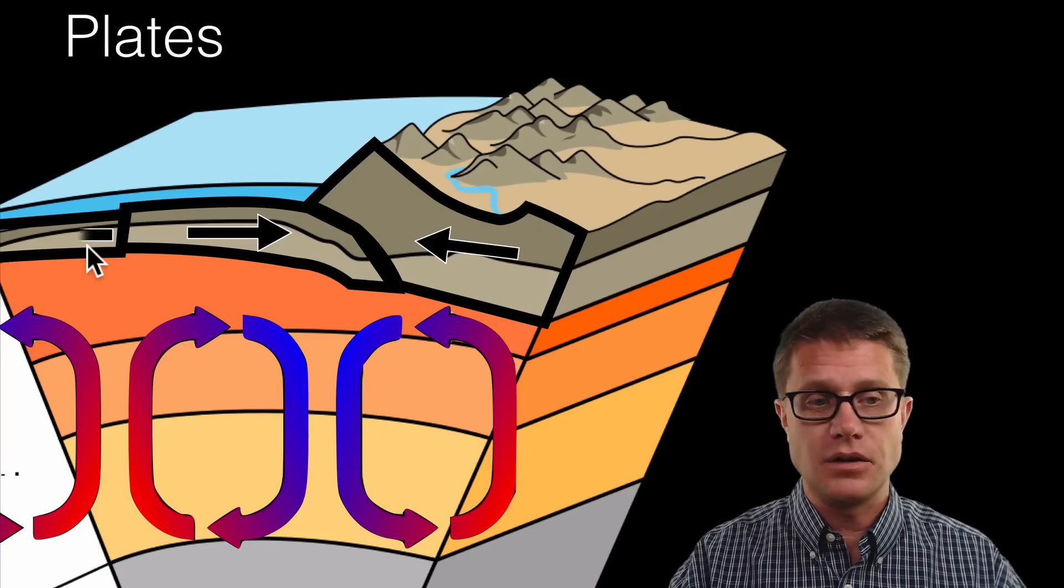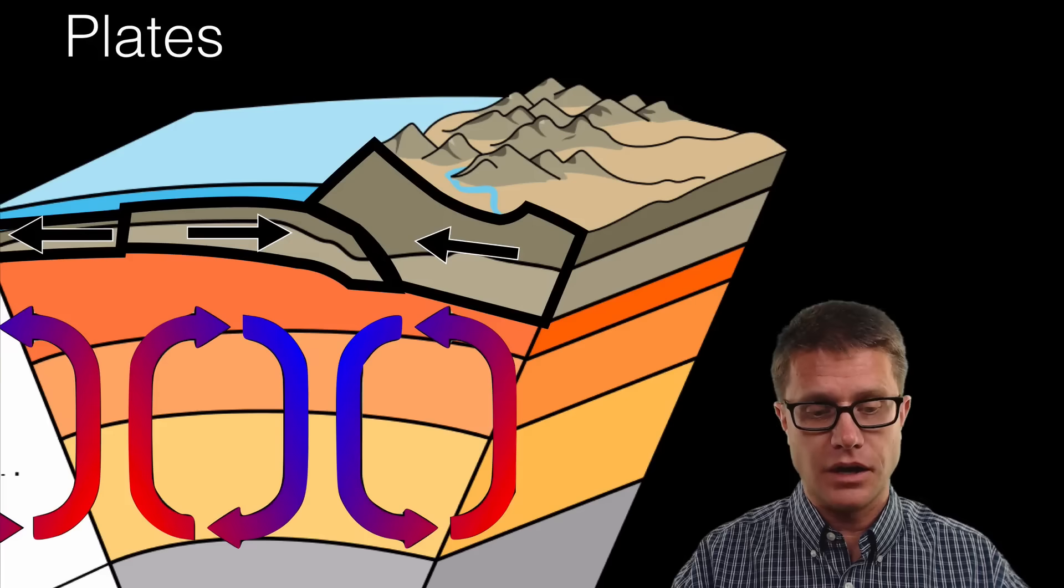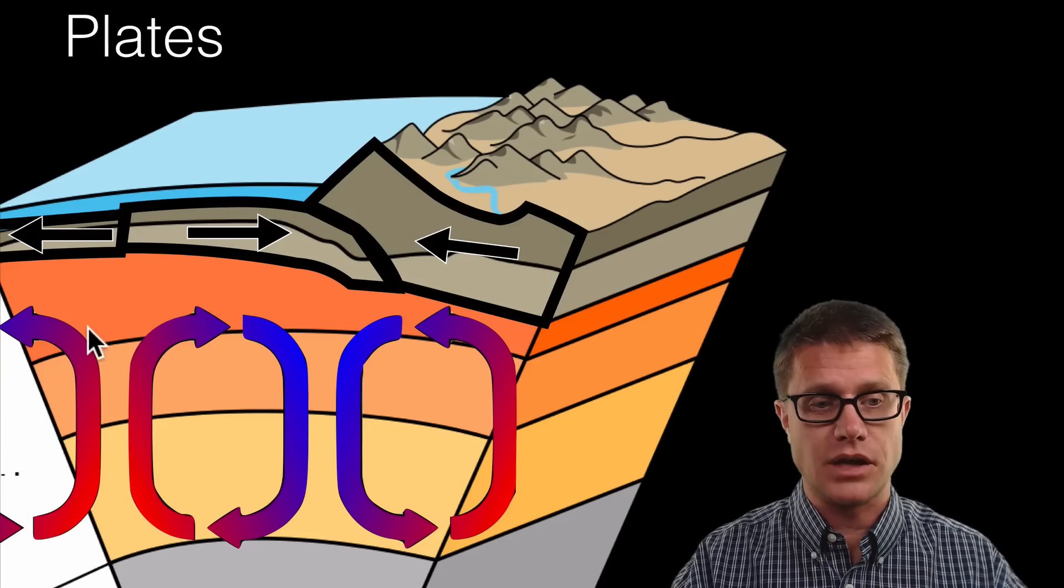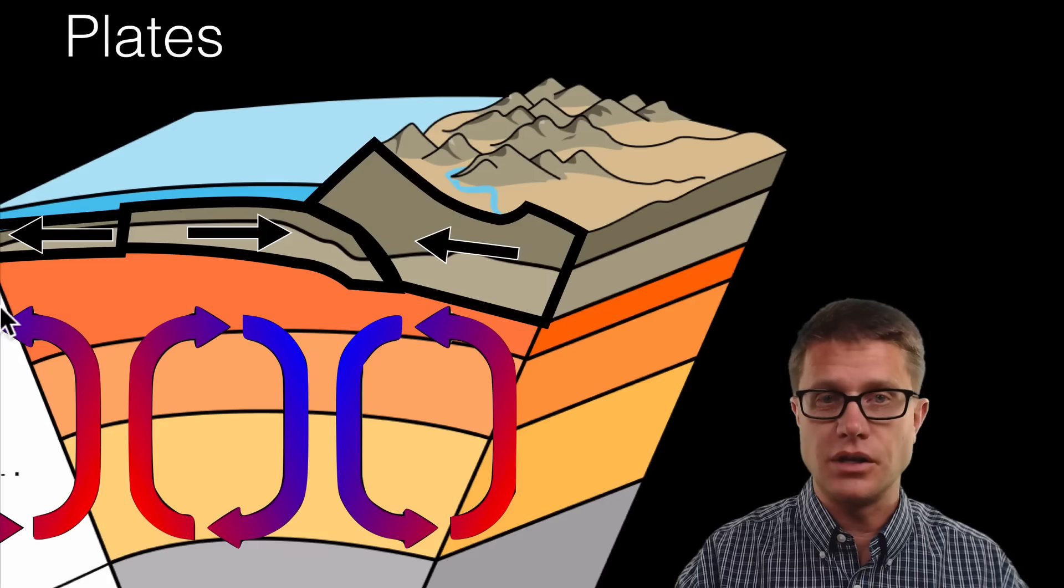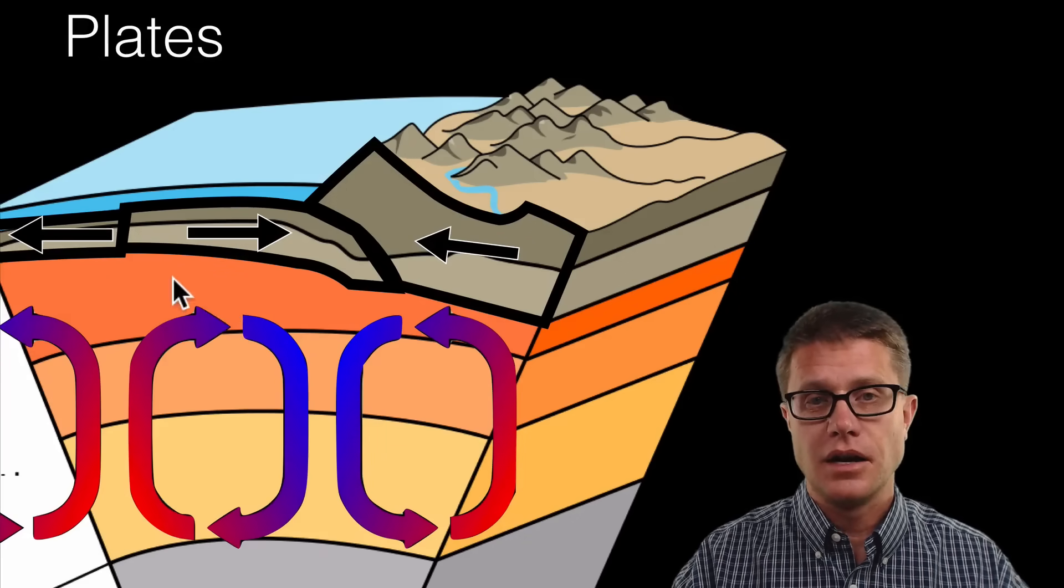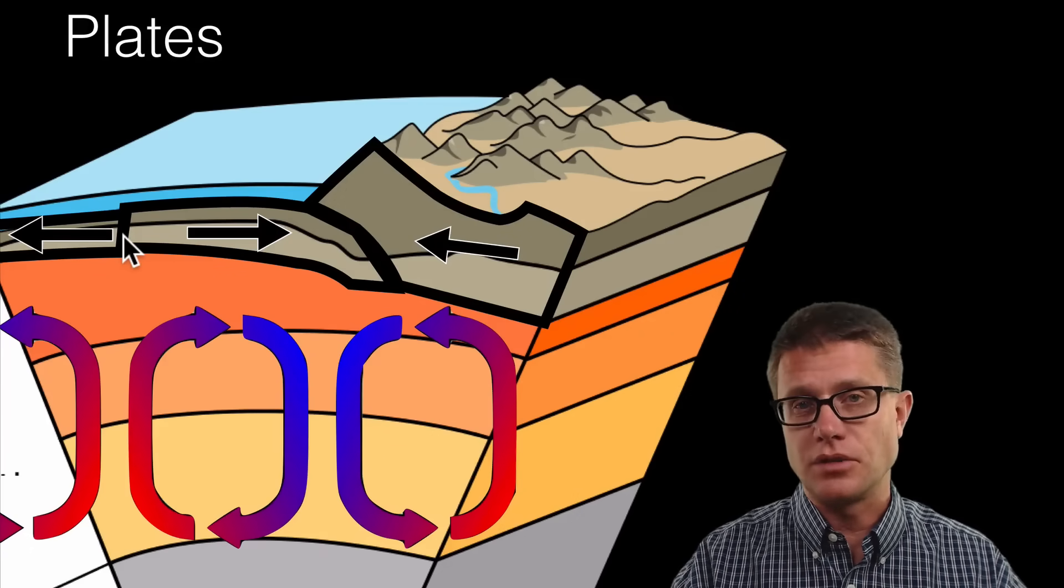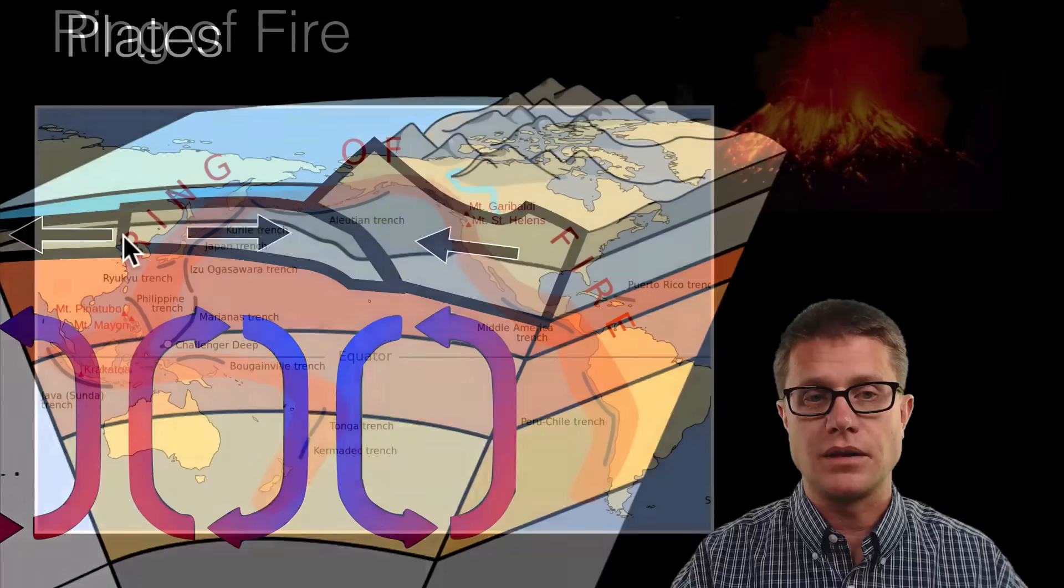But we could look over here and maybe there is another oceanic plate that is moving in the other direction. Why is it moving in the other direction? Because the convection current is pushing it here or pushing it there. And so we could have this mid-Atlantic ridge or this mid-oceanic ridge being formed right there.